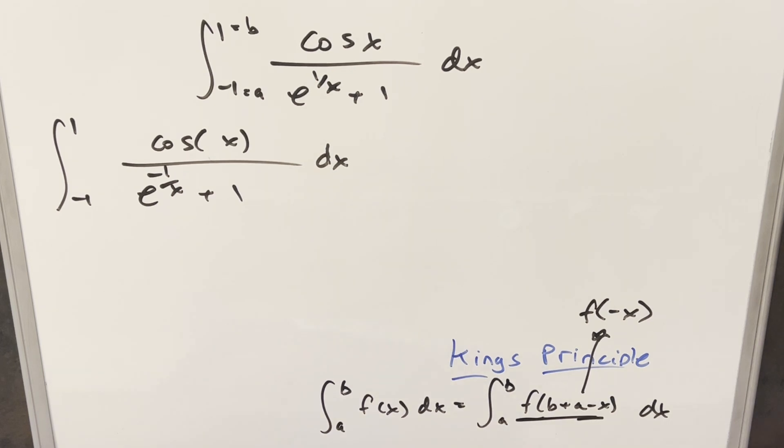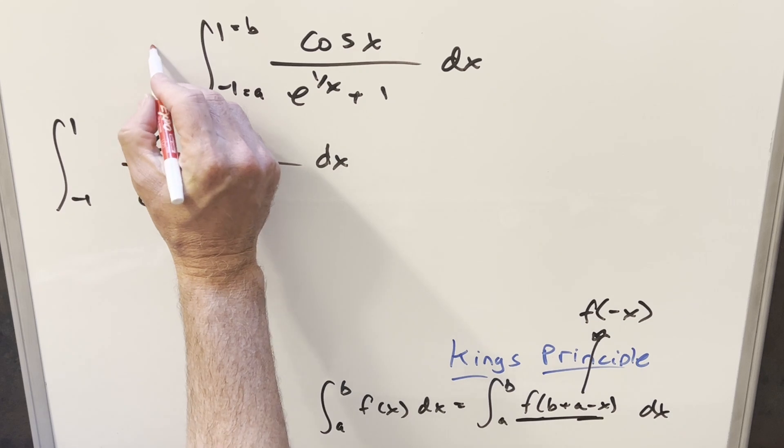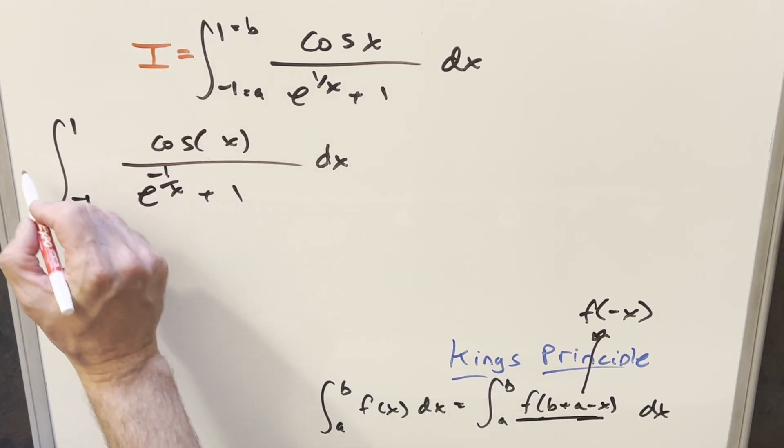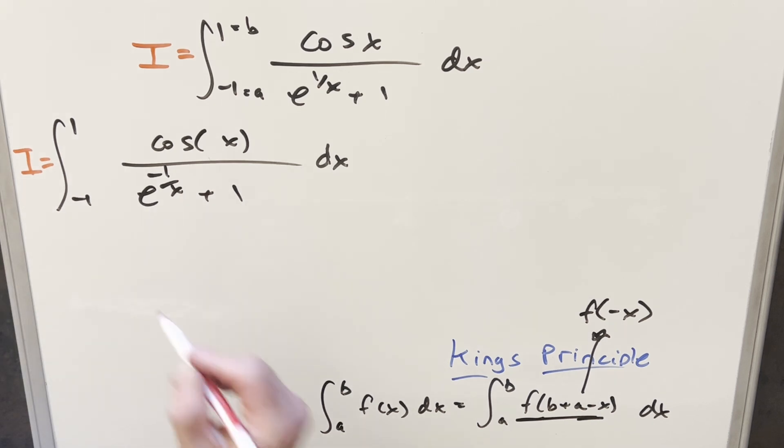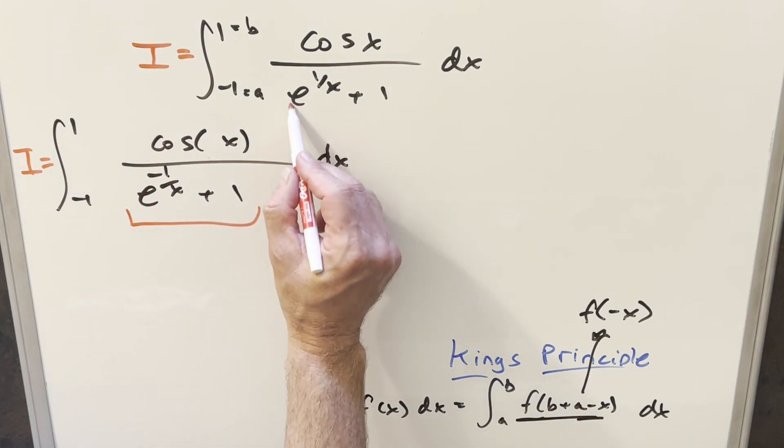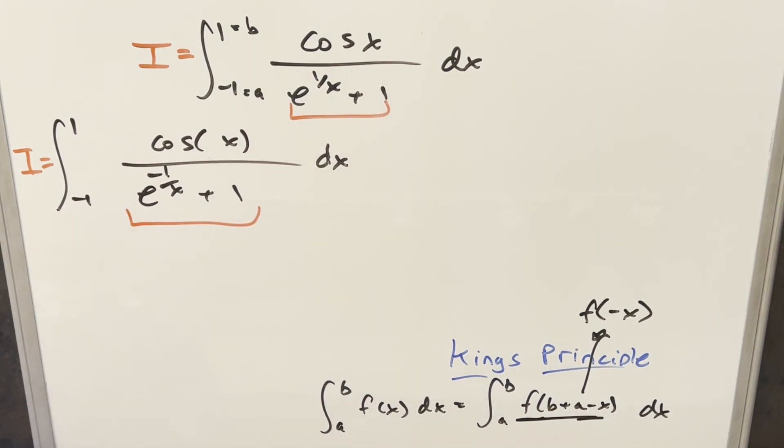And then ultimately what I want to do is I want to add these two together. If I label, let's label our original integral I, and then so everything over here is still I. But if I want to add these two things together, what's going to help is if I get the same denominator, and we're not quite there yet because we have this minus sign.